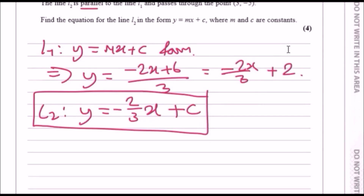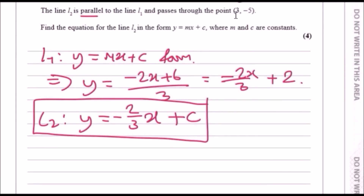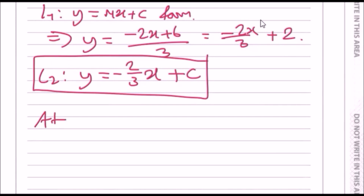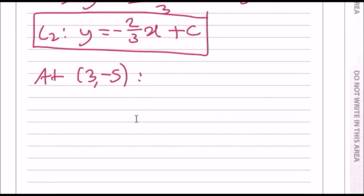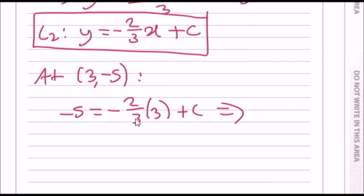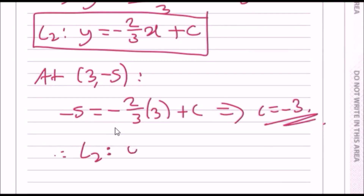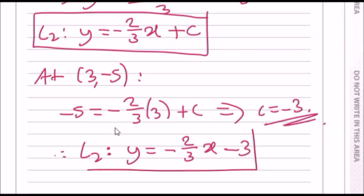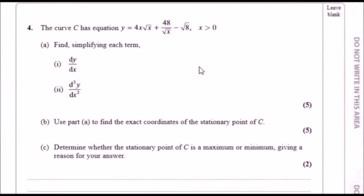At the point (3, minus 5), substitute x equals 3 and y equals minus 5 into the L2 equation: minus 5 equals minus 2 over 3 times 3 plus c. Solving for c gives c equals negative 3. Therefore the final equation for L2 is y equals minus 2 over 3 times x minus 3.